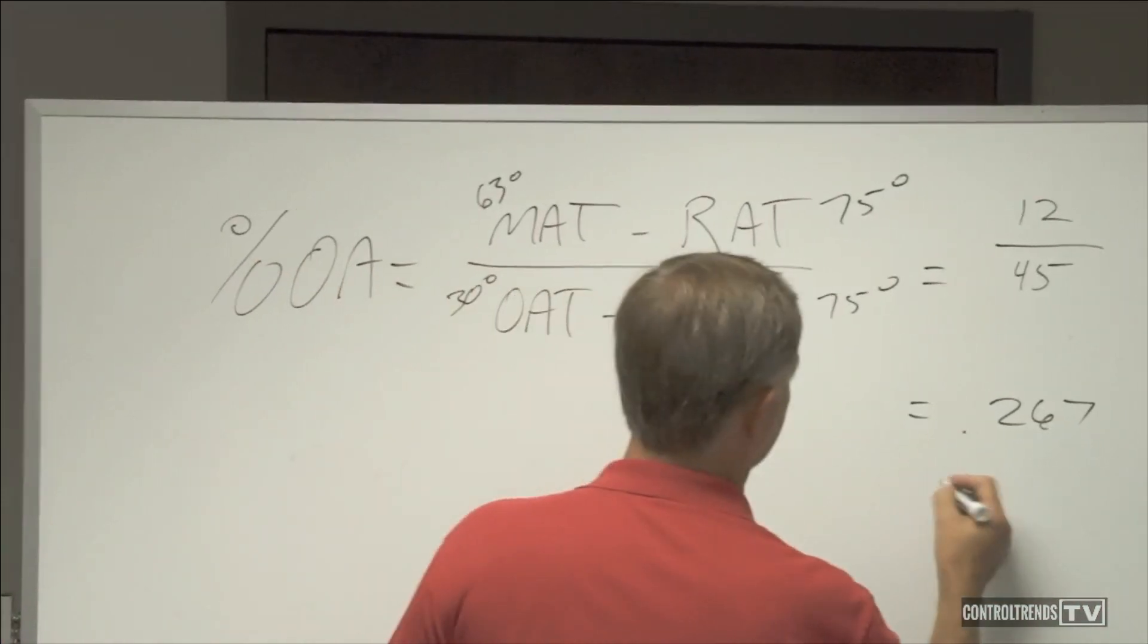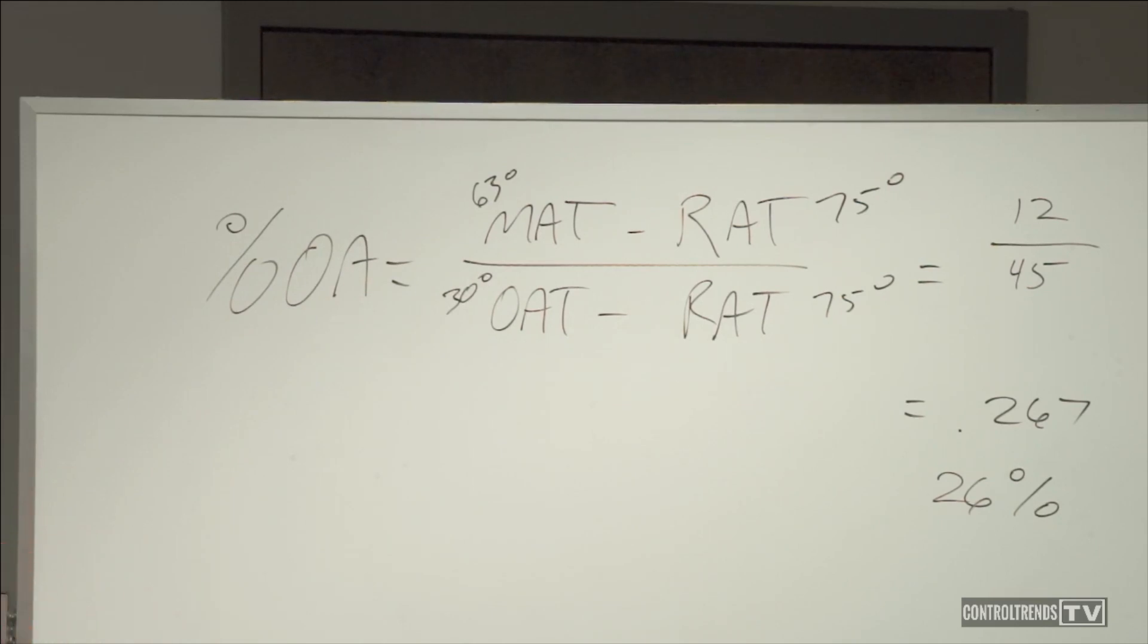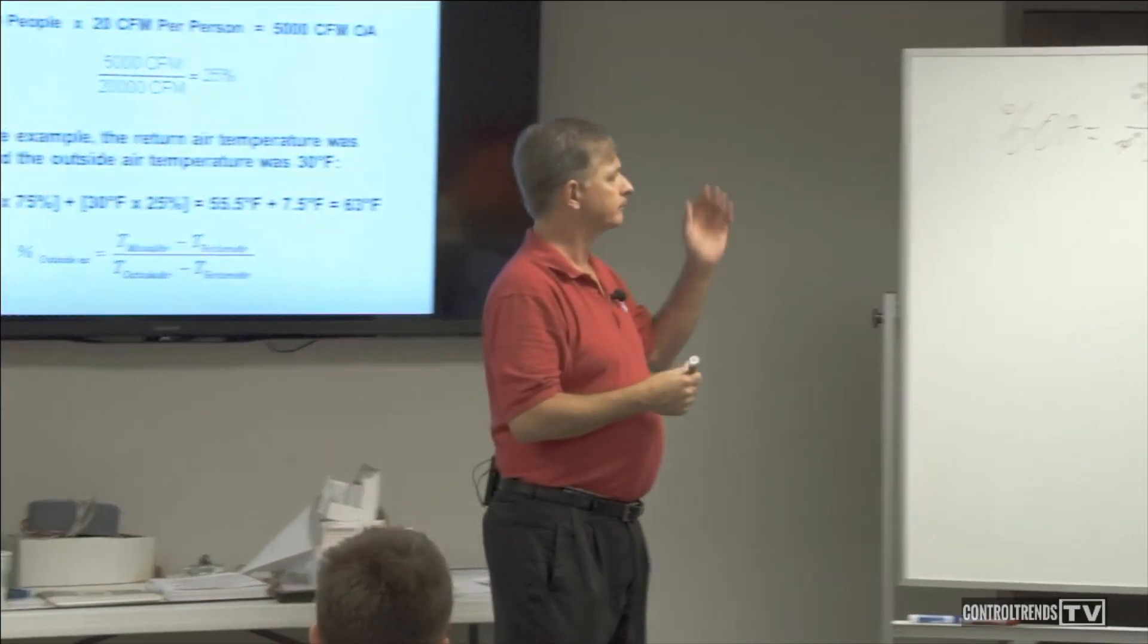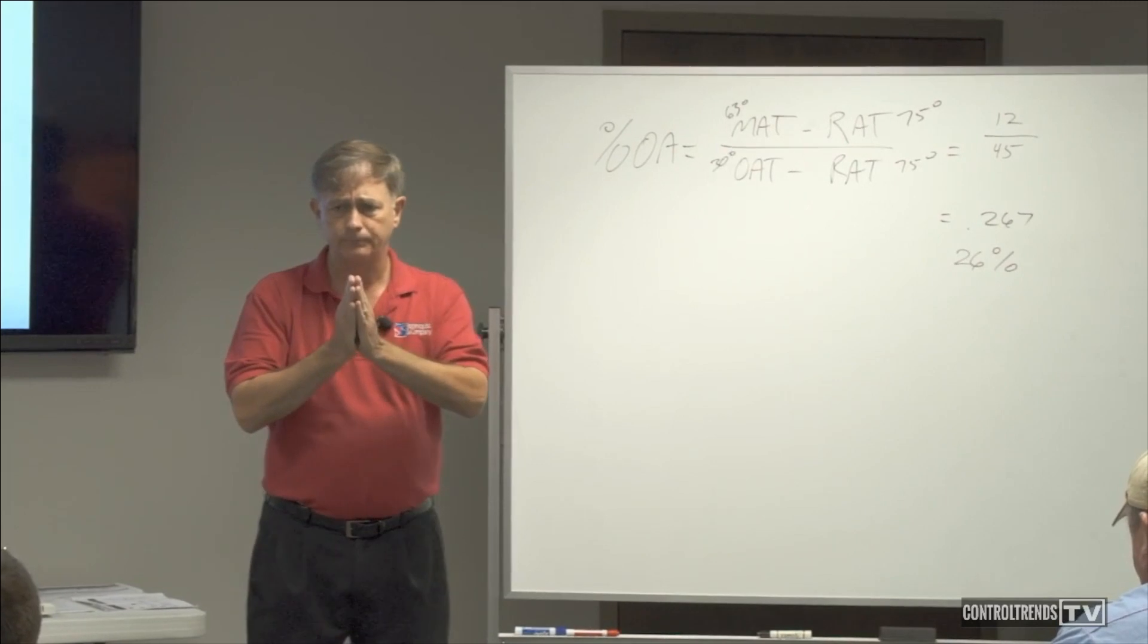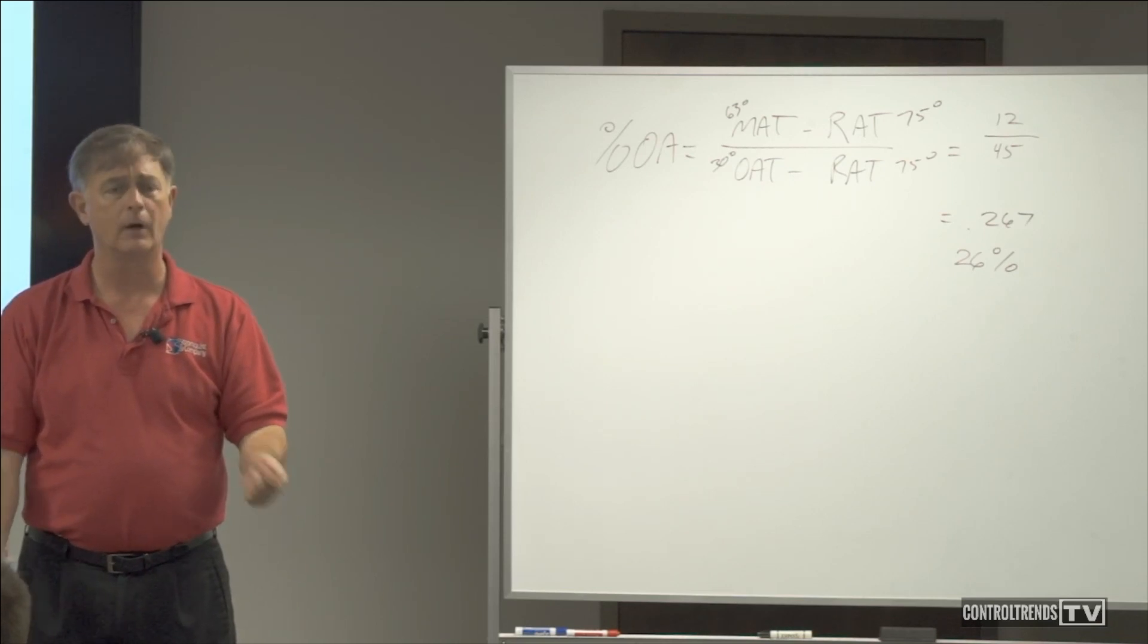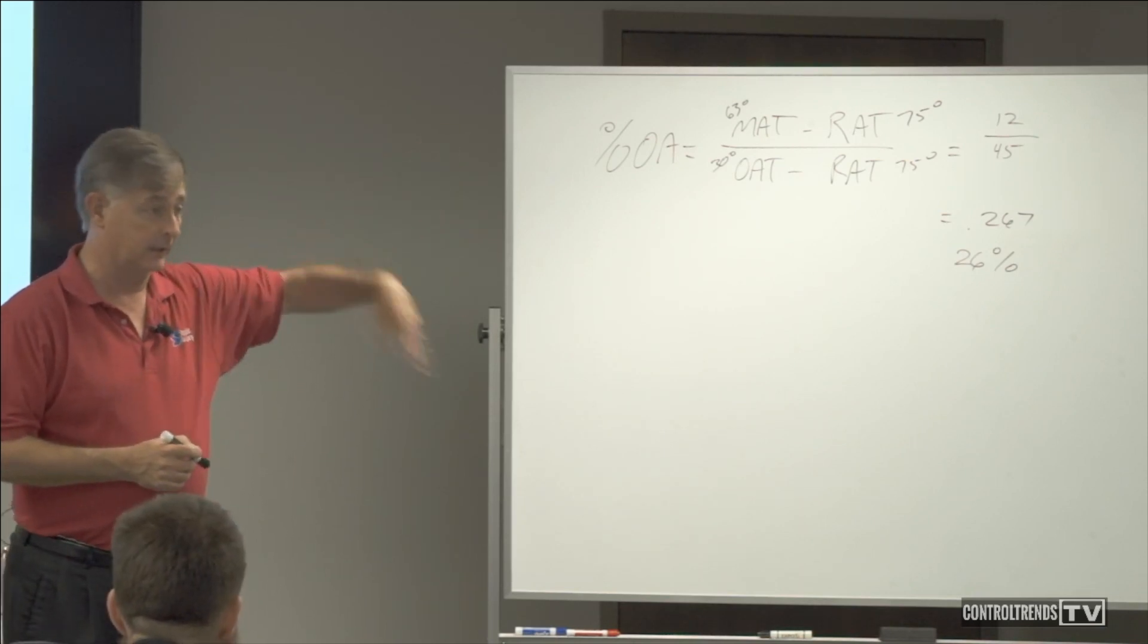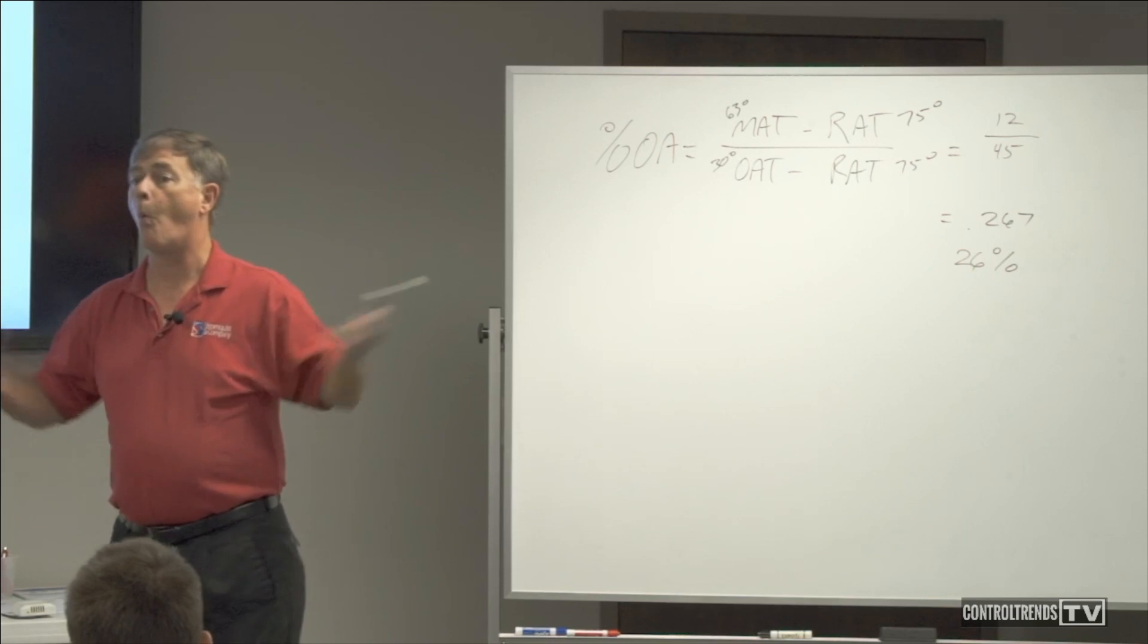So, what is that, 26 percent-ish? I don't worry about the decimal points because when you take your thermometer and stick it in there, are you leaving it in there long enough? You might be off by a half degree. So what do you think about that? Is that easy? Now, that will tell you just through temperature, taking some temperatures, working some very easy math, what your percent outside air is for that given air handler. Easy enough. Why not do it?